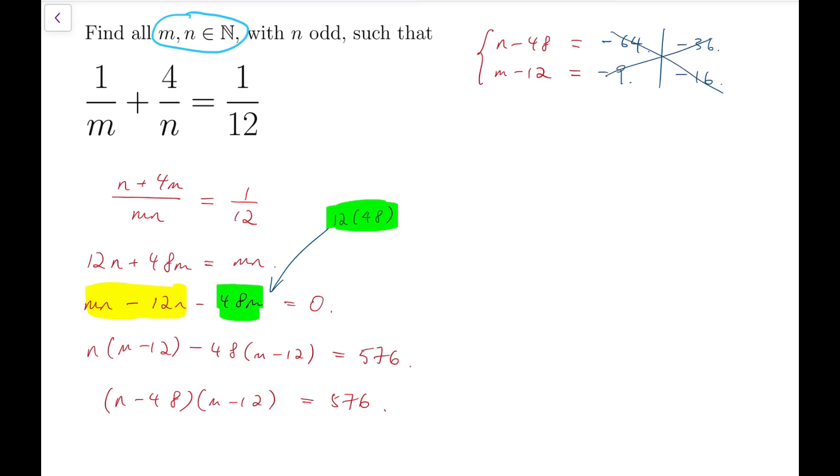So, we cannot have negative numbers. We must have n minus 48 and n minus 12 to be both positive.